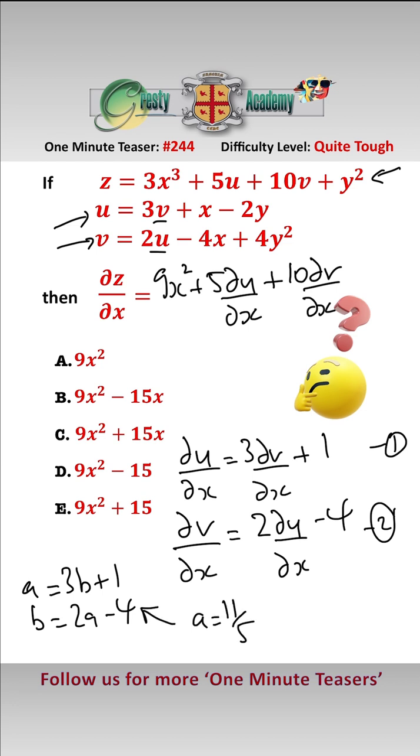Which are easily solved as a equals 11 over 5 and b equals 2 over 5. And so therefore we know that du/dx equals 11 over 5 and dv/dx equals 2 over 5.